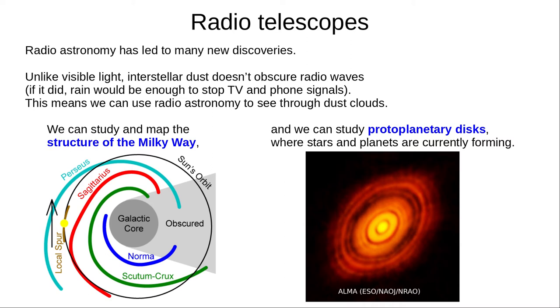Interstellar dust clouds block visible light, but not radio waves. If they did, rain would stop TV and phone signals from getting through. This means we can use radio astronomy to see through dust clouds. We've studied and mapped most of the structure of the Milky Way, apart from the region beyond the dense galactic core.